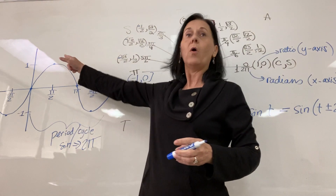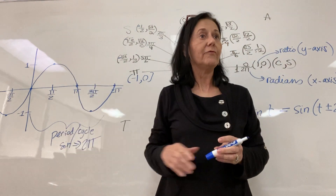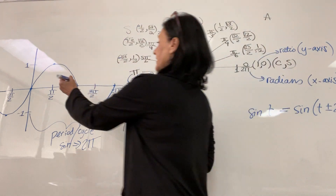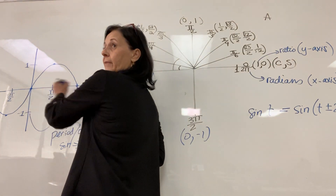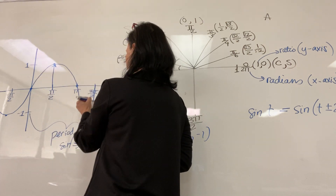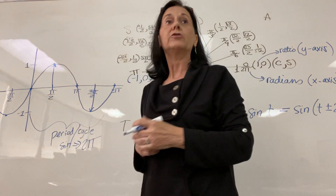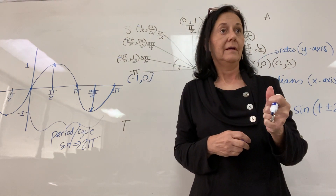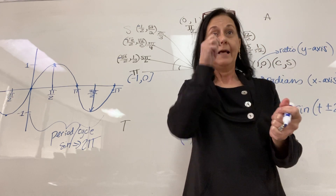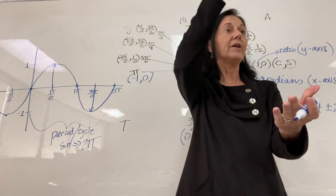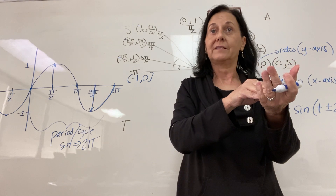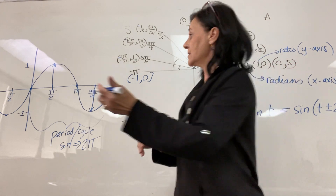The fact that the sine curve goes up to one and down to negative one — that's called the amplitude. The distance from the axis to the highest point or to the lowest point is your amplitude. Unless the curve has been transformed, the amplitude is one, meaning the highest point is one unit above or below the x-axis.